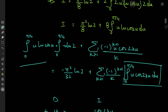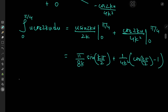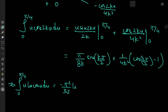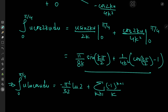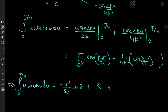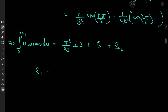Our target integral was ∫₀^{π/4} u·log(cos u) du, which now equals −π²/32·log 2 plus the infinite series involving the result we just found. We call the series contributions S₁ and S₂. For S₁ we have the sum over positive integers k of [(-1)^(k+1)/k]·[π/(8k)]·sin(kπ/2), which simplifies to (π/8) times the sum over k of [(-1)^(k+1)/k²]·sin(kπ/2).